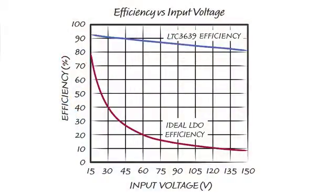This graph compares the efficiency of the LTC3639 to the efficiency of an LDO. Here you can see that while the LDO efficiency drops off dramatically at high input voltage, the LTC3639 efficiency remains above 80 percent, all the way up to 150 volts.